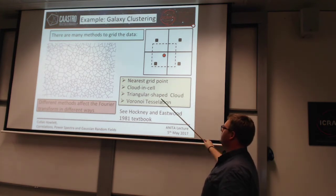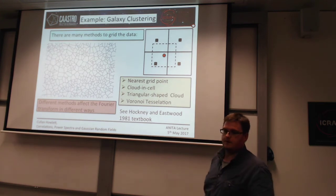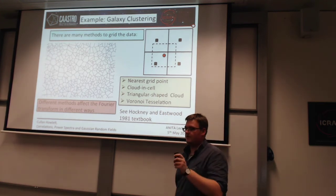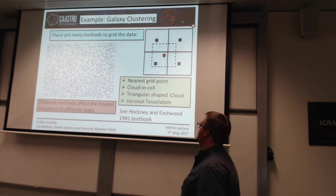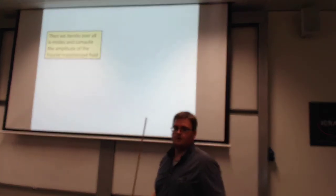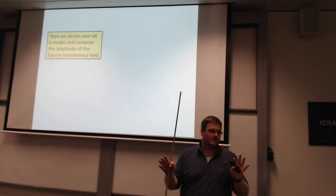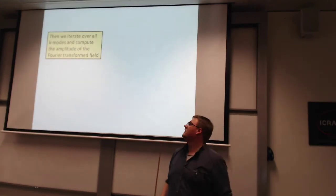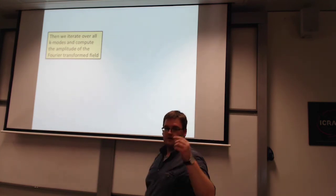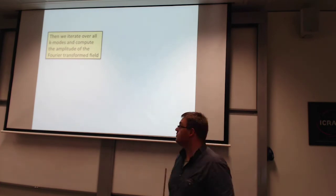Ultimately, which gridding method you choose can probably be corrected for. Once you've got your Fourier transformed over-density field — you've taken your data, subtracted off the randoms for each grid cell, Fourier transformed it — then you just iterate over all the modes in k-space and compute the amplitude of those modes.